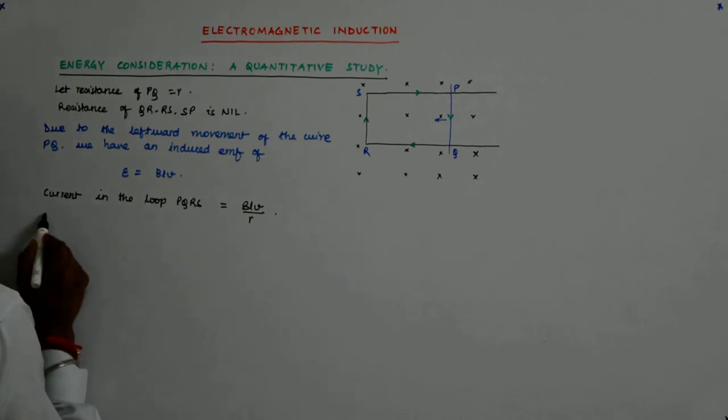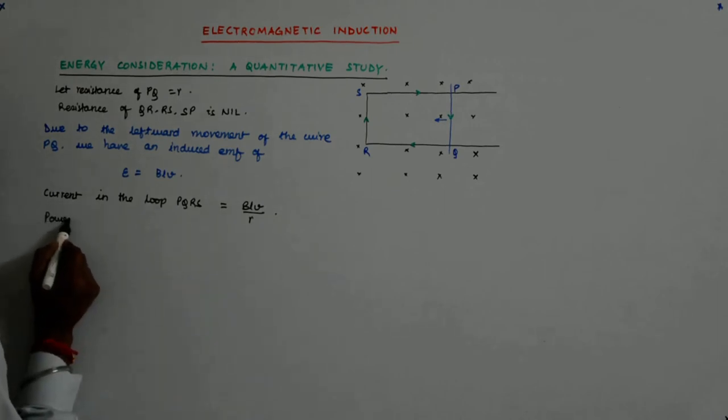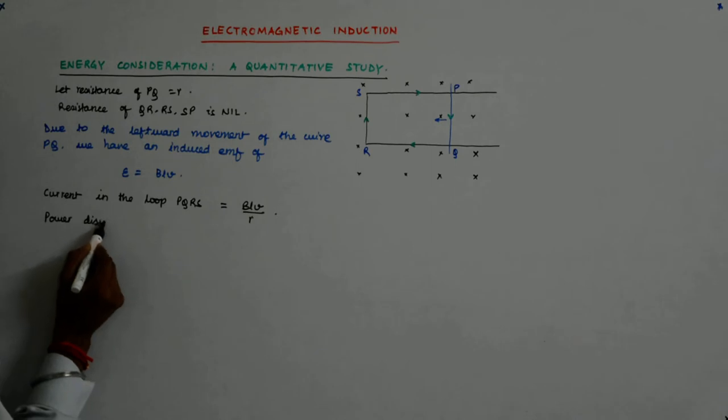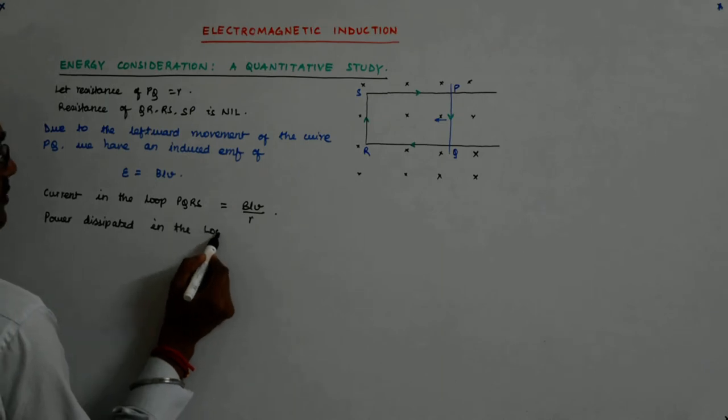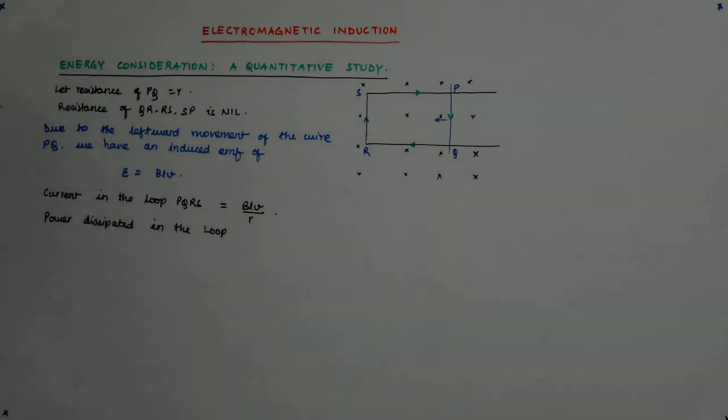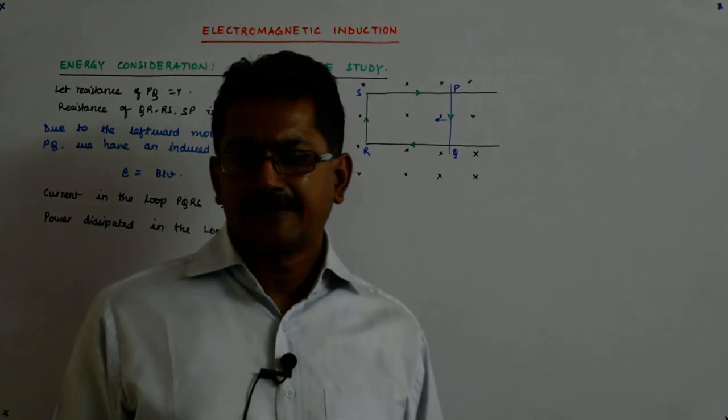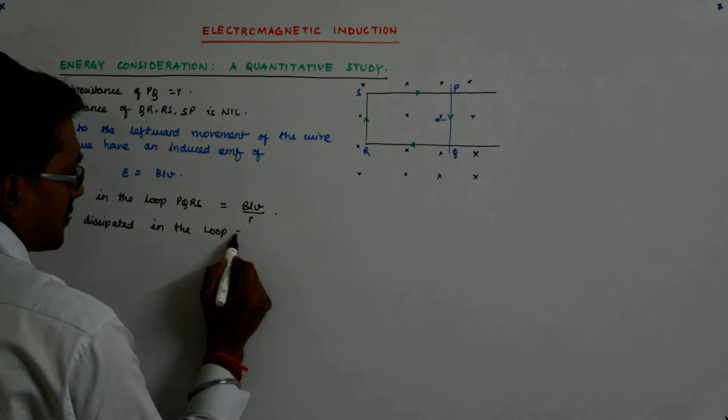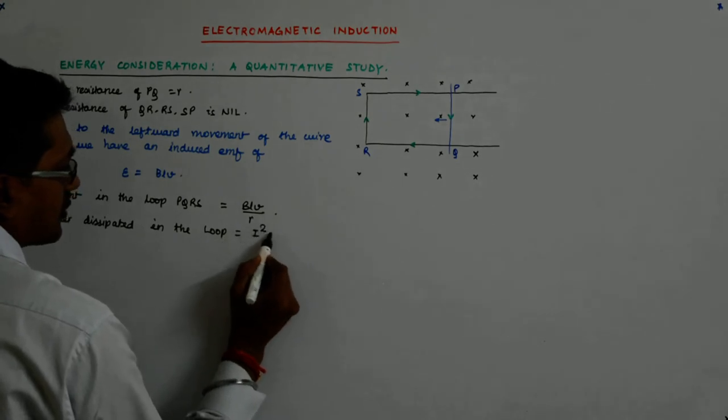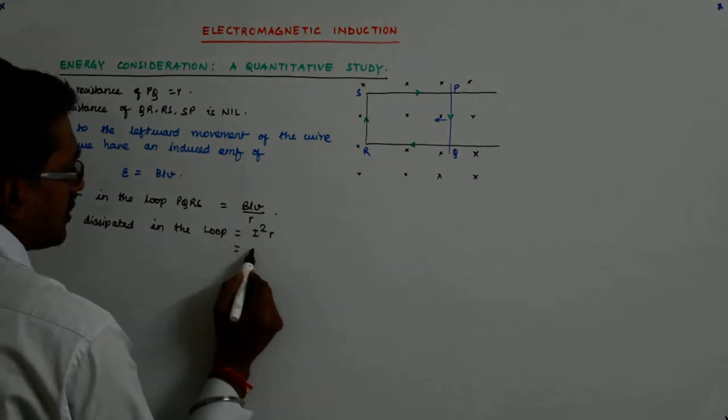So, what is the power dissipated? Therefore, power dissipated in the loop is how much? What do we think it is? What is power? I square R, Joules law of heating I square R.